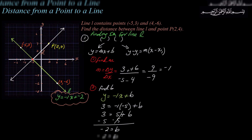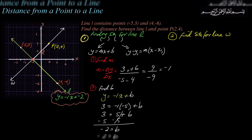That's step 1 — we have the equation for line L. Now step 2: find the equation of the white line W. The white line is perpendicular to line L, because we measure the perpendicular distance from P to line L. So these two lines are perpendicular, and perpendicular lines have slopes that are negative reciprocals of each other.